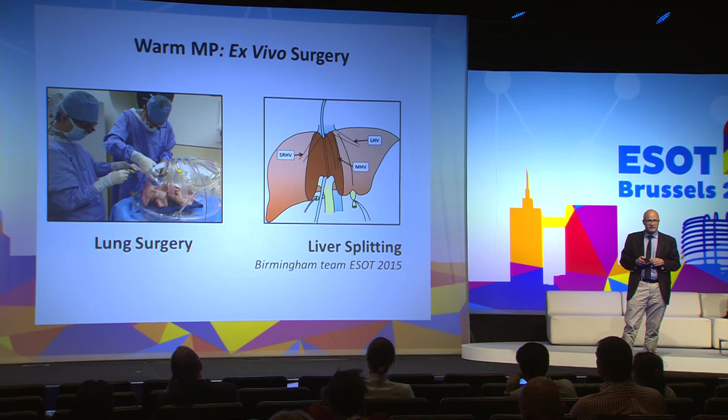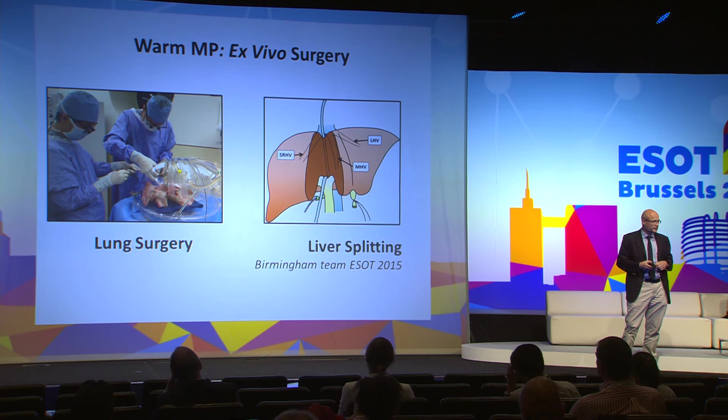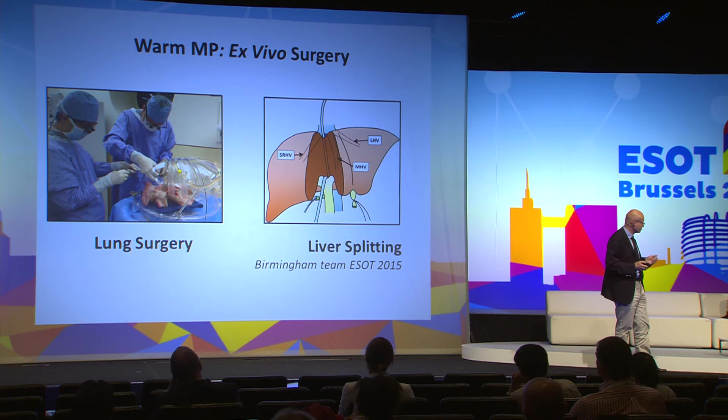Warm perfusion will also allow ex vivo surgery — it seems like science fiction, but it's not. The team in Birmingham has already split a liver during warm perfusion, and this is one of the abstracts at this meeting. Lung surgery will probably also be one of the possibilities.